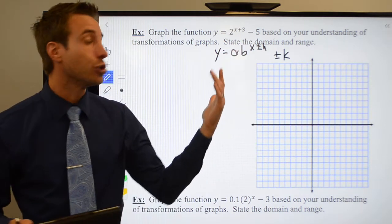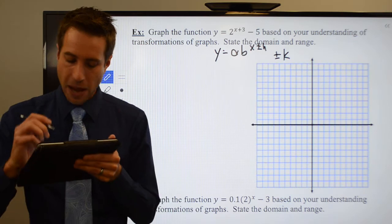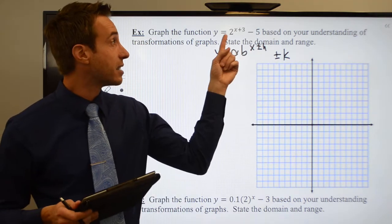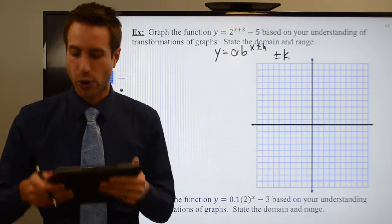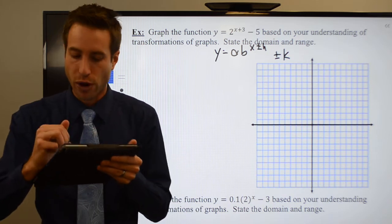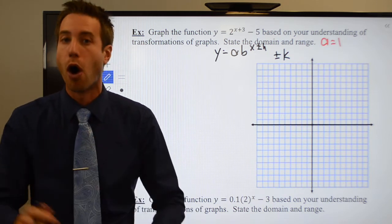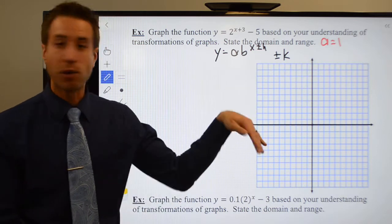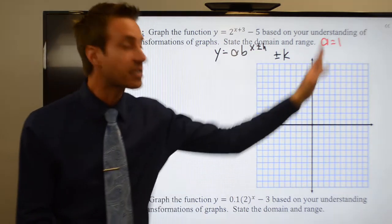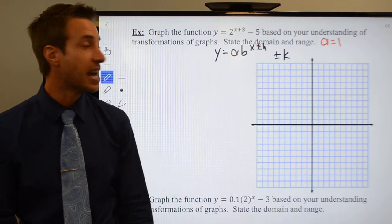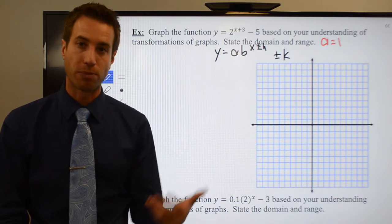I do have some transformations here. My a is the number in front of the base. I don't have one written there, which means that a is equal to one. So I don't have a reflection across the x-axis. It's going to open up above the x-axis and it doesn't have a vertical stretch or compression.